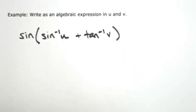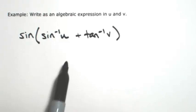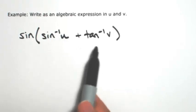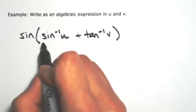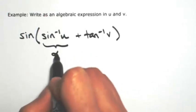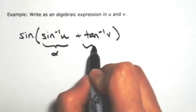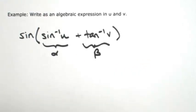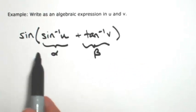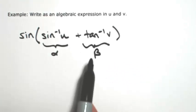Assuming that u and v are in the proper domains, we'll assume that both of these are defined. Inverses are just angles, so I'm going to call the first inverse alpha and the second one beta. So really this is just sine of alpha plus beta.